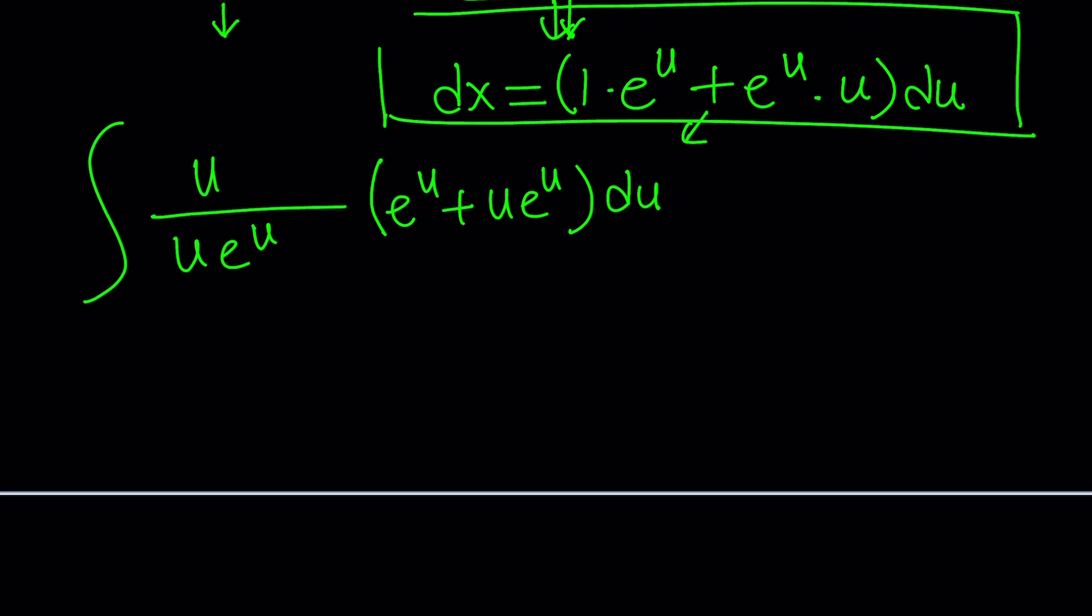Now, we can go ahead and simplify this a little bit. First of all, notice that u cancels out. Obviously, you don't want u to be zero. And then here, we can actually factor out e to the power u. That's a common factor. e to the u out, we get 1 plus u, and then that is divided by e to the u, and then multiply by du.